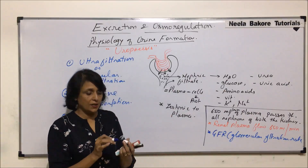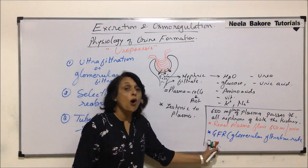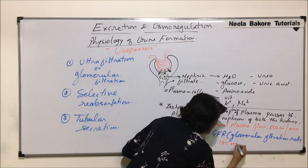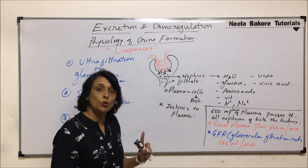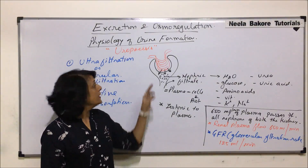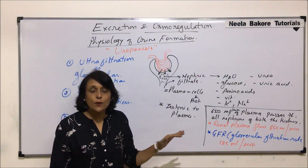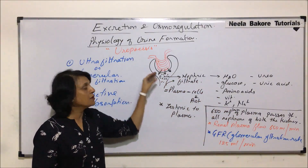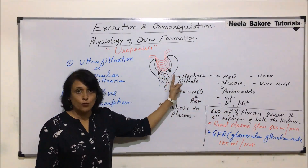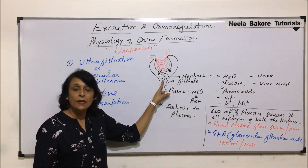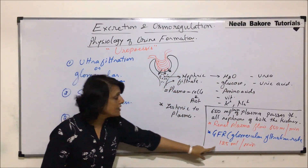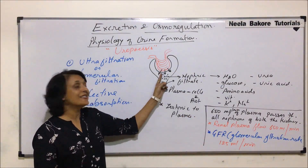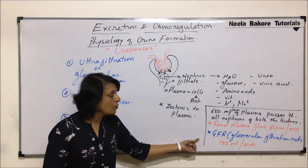The glomerular filtration rate: out of the 650 milliliters of plasma going through all the nephrons, only 125 milliliters gets filtered per minute through the capillaries. So in a minute, 650 milliliters of blood goes through all the glomeruli of both kidneys — that is the renal plasma flow — and only 125 milliliters gets filtered. This is the glomerular filtration rate. The glomerular filtration pressure is 10 millimeters of mercury, and the GFR is 125 milliliters per minute.